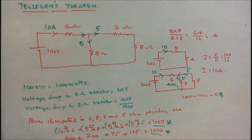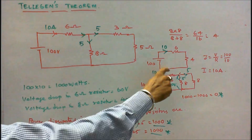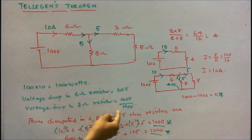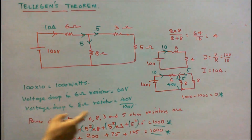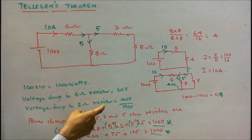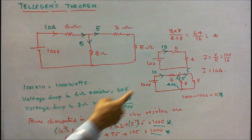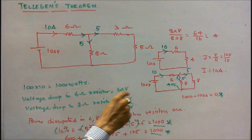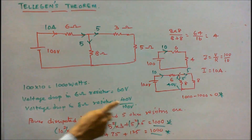Kirchha's voltage law is also verified: 60 plus 40 equals 100. In the parallel circuit, the voltage drop across the 8 ohm resistor is 40. Therefore 40 plus 60 equals 100 volts.